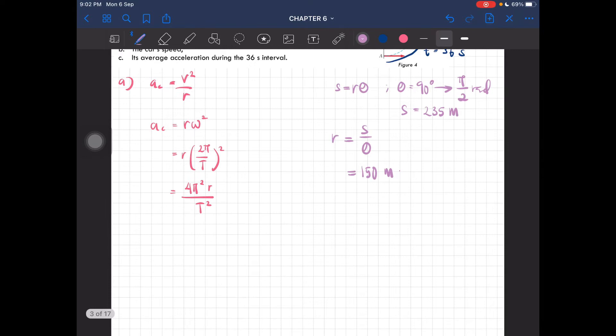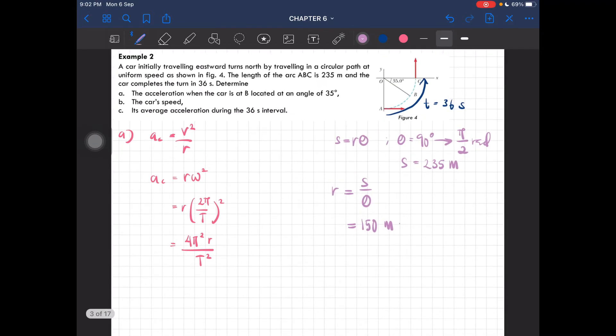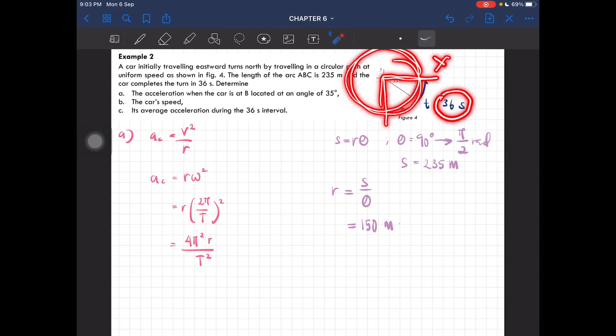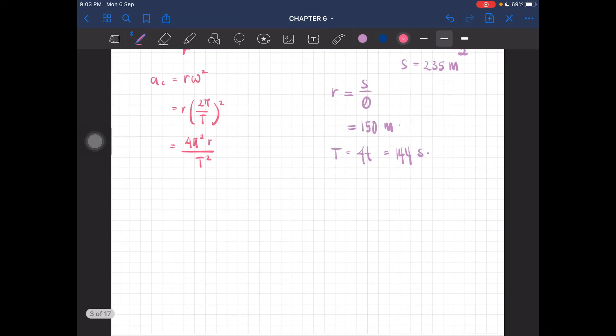The period is the time taken to complete one full cycle. If a quarter of this circle takes 36 seconds, one complete cycle is 4 times that, so the period is 4 × 36 = 144 seconds because we have 4 quadrants.